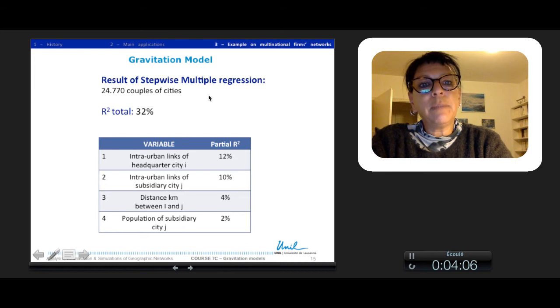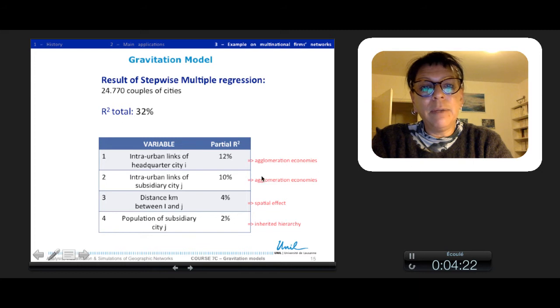So the result of stepwise multiple regression between all these couples of cities is 32%, which is not very high. It is composed first by the two intra-urban linkages which reflect the agglomeration economies, the distance, so the spatial effect, and the inherited hierarchy, the population of subsidiary J.